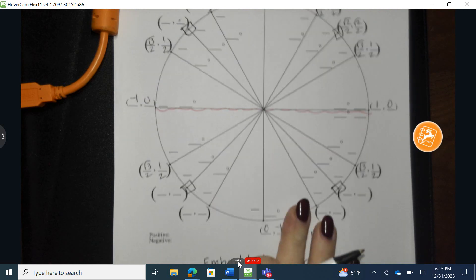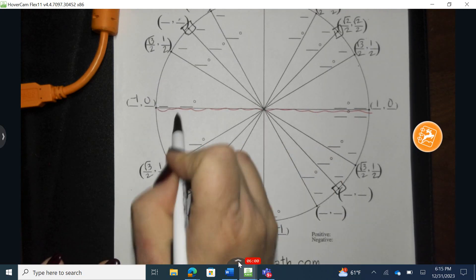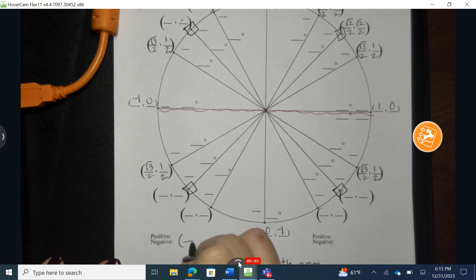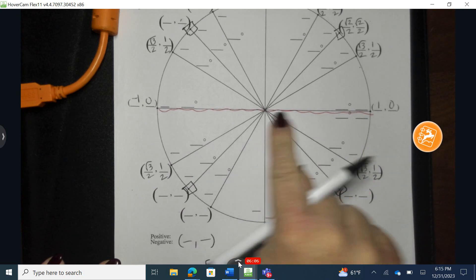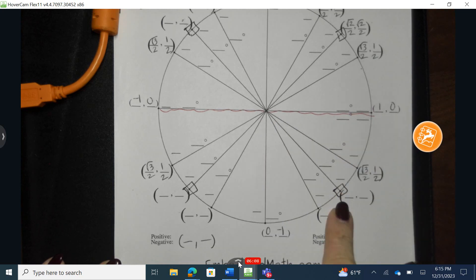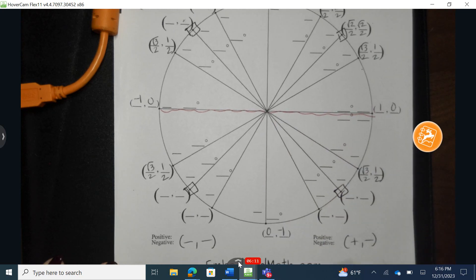In quadrant number three, both the cosine and the sine, so the x and the y are both negative. So it's negative and negative. And in quadrant number four, the cosines or the x's are positive, but the y's are negative. So cosines positive and sines negative.